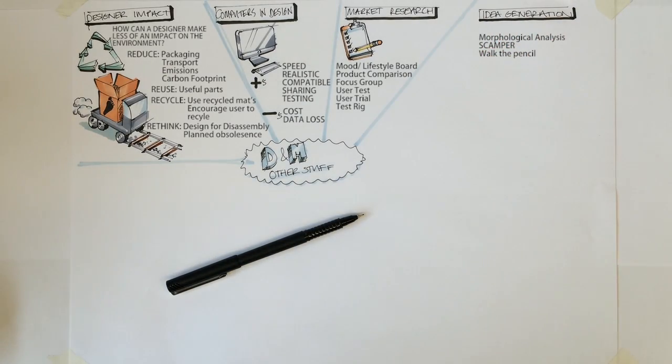Morphological analysis. A simple form is twisted, stretched, pulled or widened, morphing it into a new form. SCAMPER. Shapes are added, subtracted and multiplied together to create more interesting forms. Walk the pencil. Interesting shapes are pulled from a path drawn by the pencil.